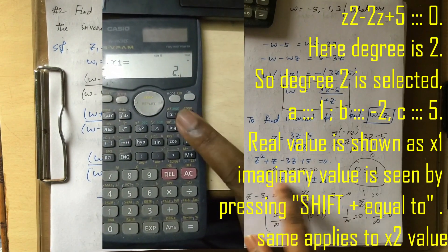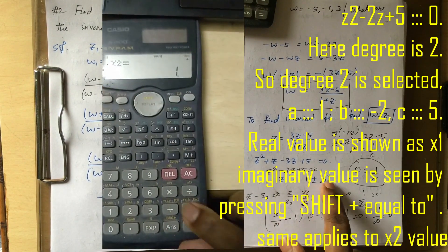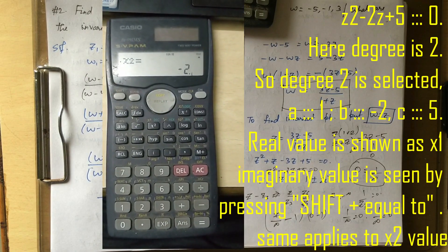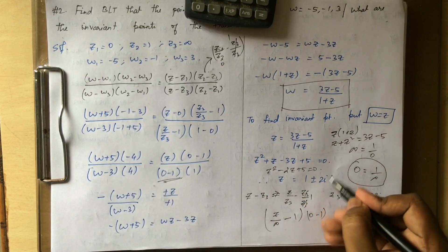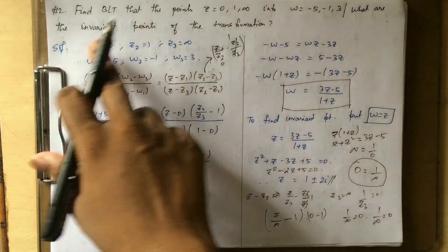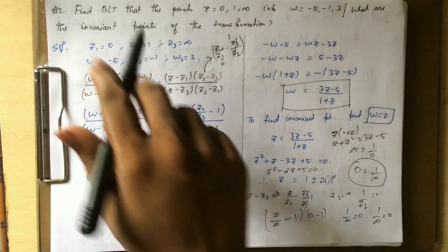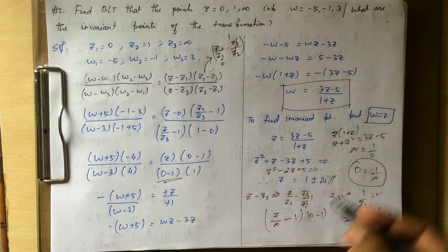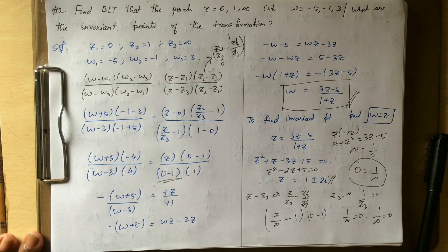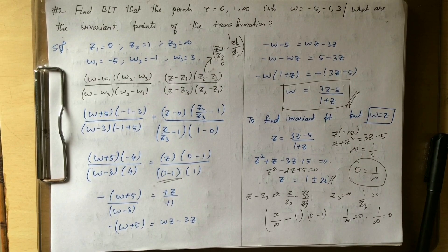Solving the quadratic, we get z = 1 plus or minus 2i. So the invariant points are 1 + 2i and 1 - 2i. That's the bilinear transformation and its invariant points. Thanks for watching, guys, bye!